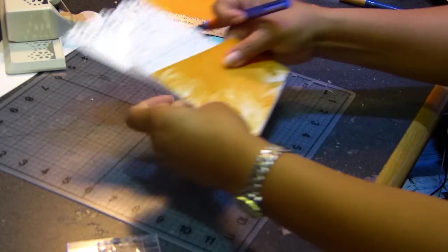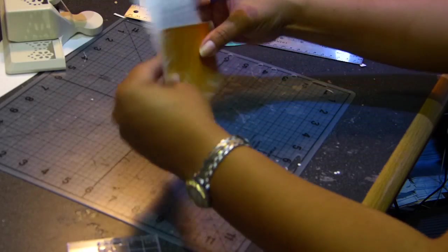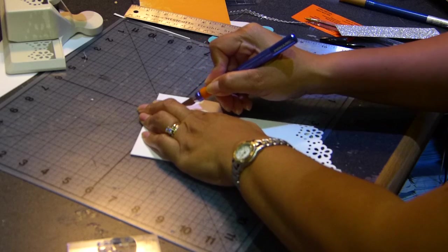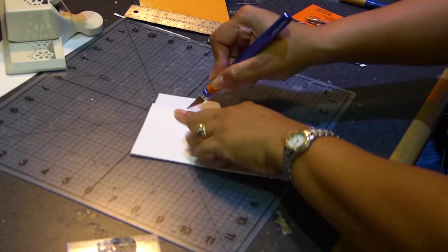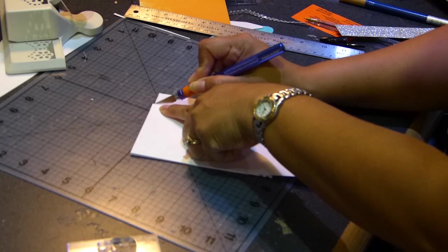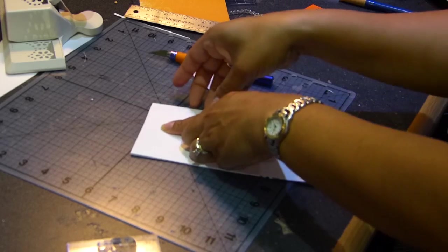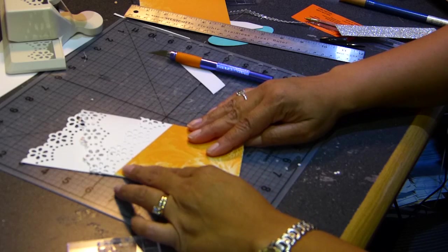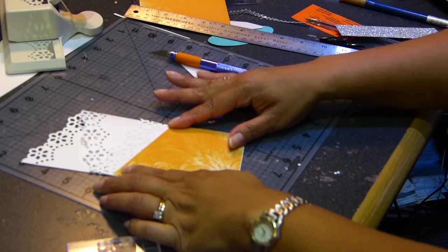After I line it up, I'm gonna make sure that I have it here and I'm just gonna go ahead and cut the excess. Let me show you I'm cutting the excess of the paper. So now I have it in here.